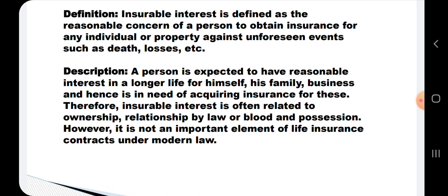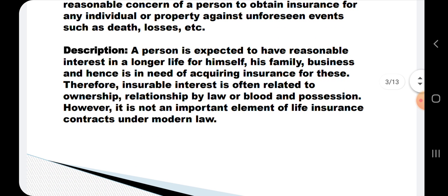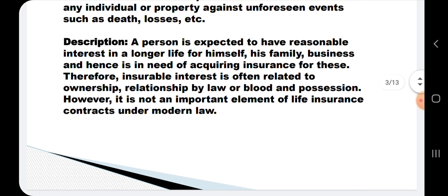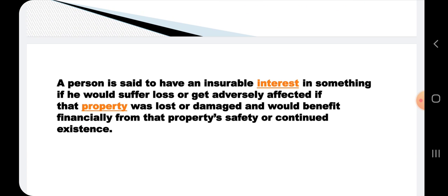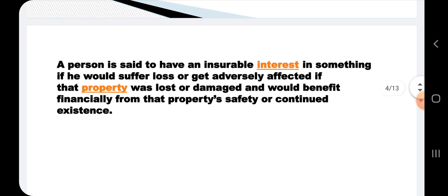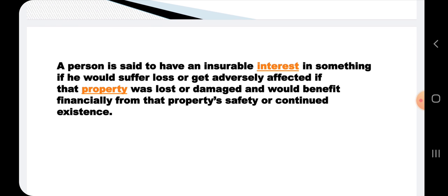A person exposed to an insurance policy is expected to have reasonable interest in a longer life for himself, his family, business, and hence is in need of acquiring insurance for these. Therefore, Insurable Interest is often related to ownership, relationship by law or blood, and possession. However, it is not an important element of life insurance contracts under border law. A person is said to have insurable interest in something if he would suffer loss or get adversely affected if that property was lost or damaged, or would benefit financially from the property's safety or continued existence.